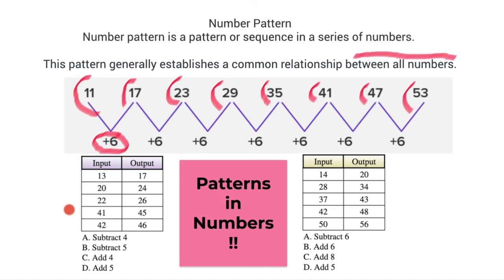These are input and output boxes. You have 13 as the initial input and when you get the output you have 17. So what is the relationship between 13 and 17? You can use addition, subtraction, or multiplication depending on the pattern you see.